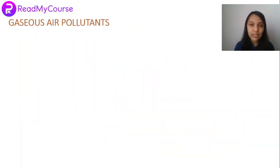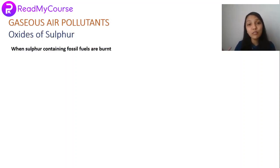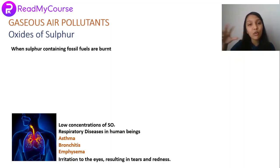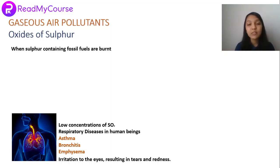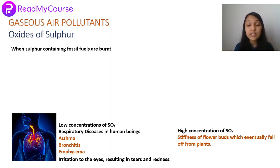First among gaseous air pollutants are the oxides of sulfur, which are produced when sulfur-containing fossil fuels are burned. These oxides are very harmful to human beings, plants, and animals. Even low concentrations of sulfur dioxide can cause respiratory diseases in humans such as asthma, bronchitis, and emphysema, and cause irritation to the eyes, resulting in tears and redness. At high concentrations, sulfur dioxide causes stiffness of flower buds, which eventually fall off from plants.